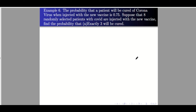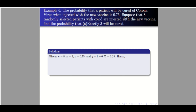Example six: The probability that a patient will be cured of coronavirus when injected with a new vaccine is 0.75. Suppose eight randomly selected patients with COVID are injected with the vaccine. For letter a: find the probability that exactly three will be cured. n equals 8, x equals 3, p equals 0.75 — no need to divide by 100 since it's already a decimal — and q equals 0.25. Using the formula, the answer is 0.0231.